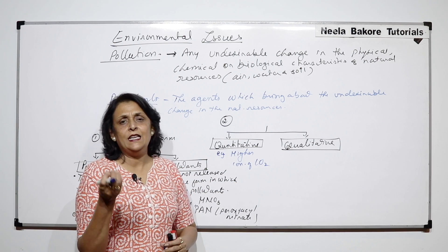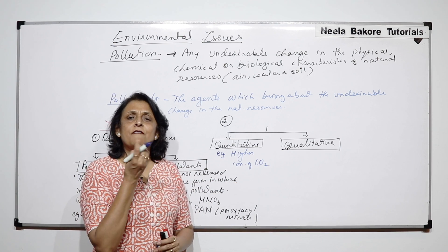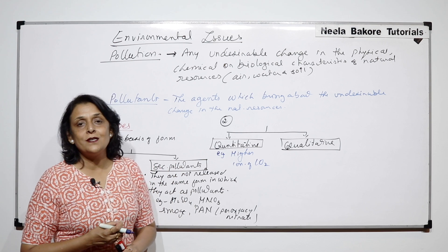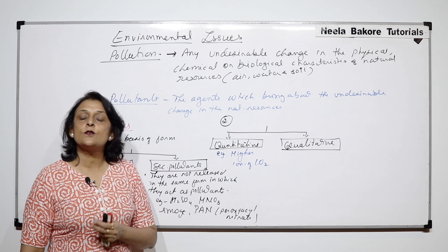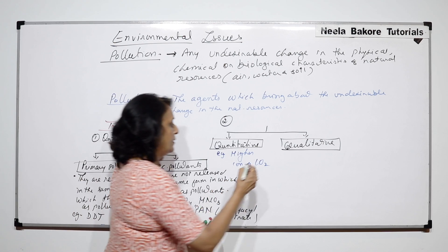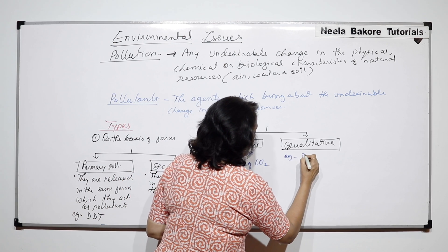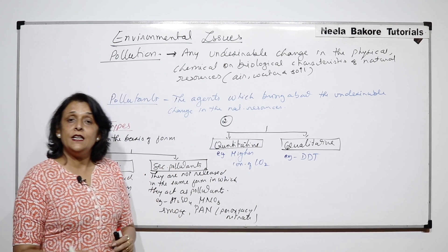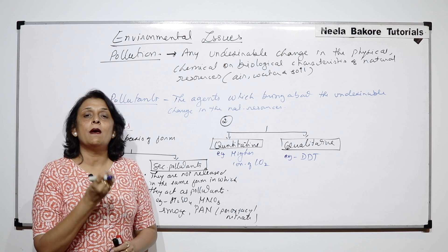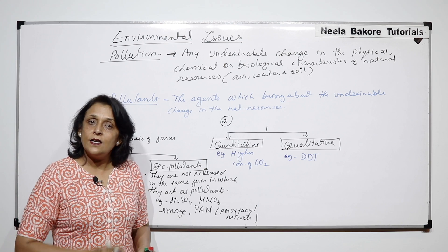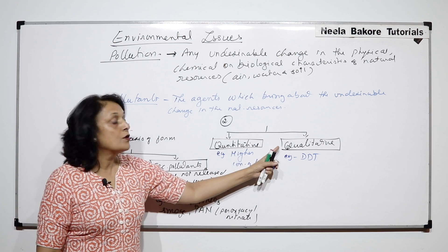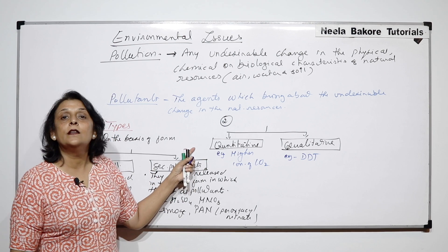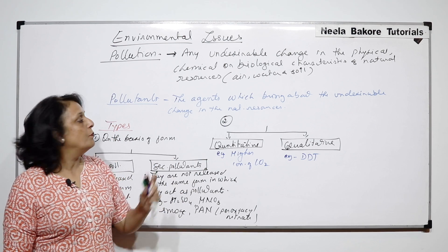For the qualitative category, even if a substance is present in a very small quantity, its nature is such that it will act as a pollutant regardless. The example here is DDT — even if DDT is present in very small quantity, it is still going to be a pollutant. So that is the quality of that substance which matters. This is another way of classifying pollutants.